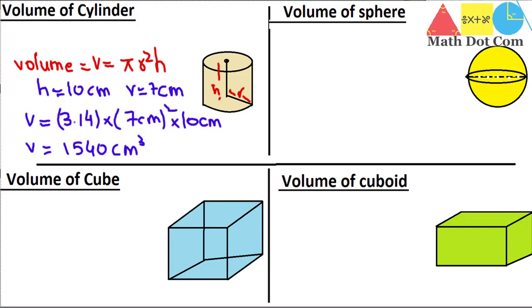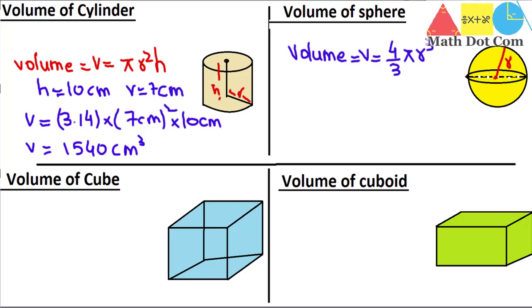Now let's move to the volume of a sphere. A sphere is a three-dimensional object — it looks like a circle but it is not a circle. It's a 3D object, just like a ball. You will be asked to find the volume of a ball or sphere and you need a formula. The formula for the volume of a sphere is V = (4/3) π r³, where r is the radius, since every point on a sphere is equidistant from the center.